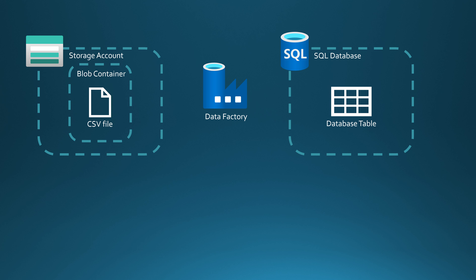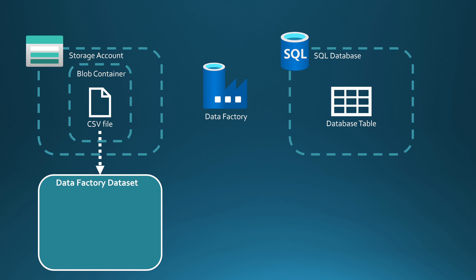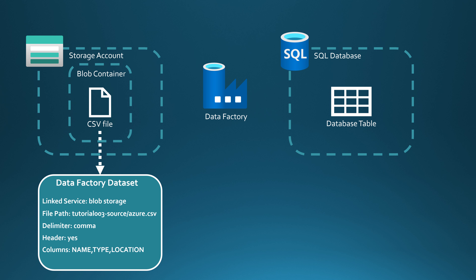Before we can do that, we have to describe the CSV file to Data Factory. In Data Factory, we are going to use an object called Dataset to describe this CSV file. First, we need to describe what is the linked service for this CSV file — in this case it's going to be Blob Storage. Then we need to tell Data Factory what is the file path to this file, and we need to tell the delimiter of the file — with the CSV file it's going to be comma. Then we need to tell whether our CSV file has a header, and this CSV file does have a header. Because our CSV file has a header, Data Factory can automatically read the columns from that file, and we can use this dataset as instructions for Data Factory in order to read the data.